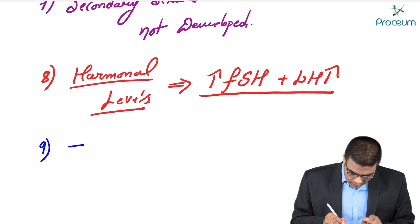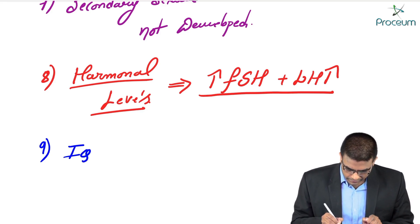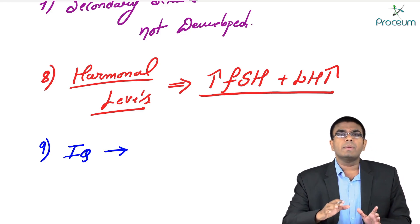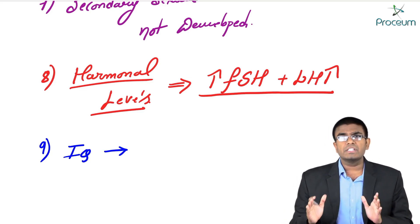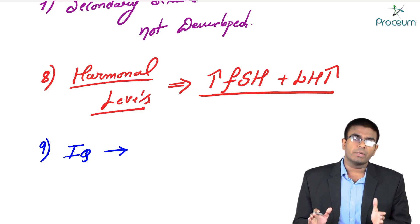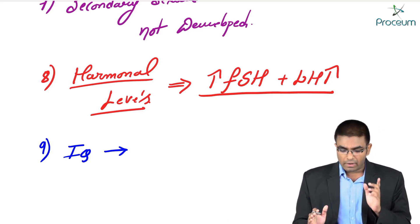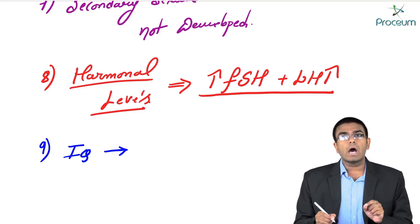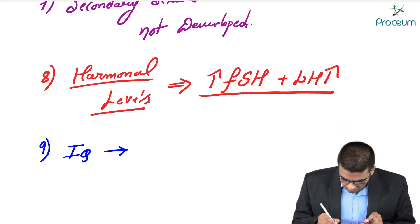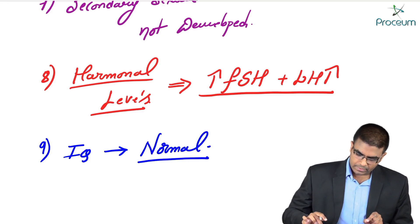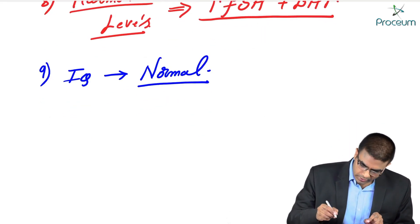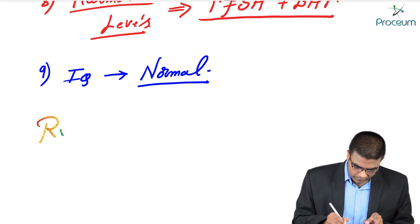Regarding the IQ of a Turner female — is she mentally sound or does she have mental retardation due to loss of one X chromosome? A very important MCQ: these females are mentally normal. The IQ of this female is normal — please don't forget this.